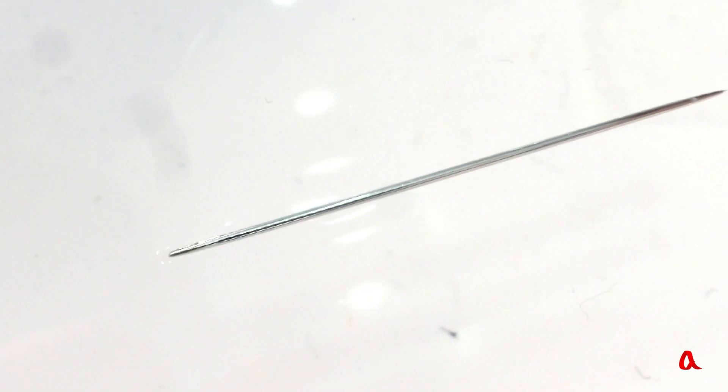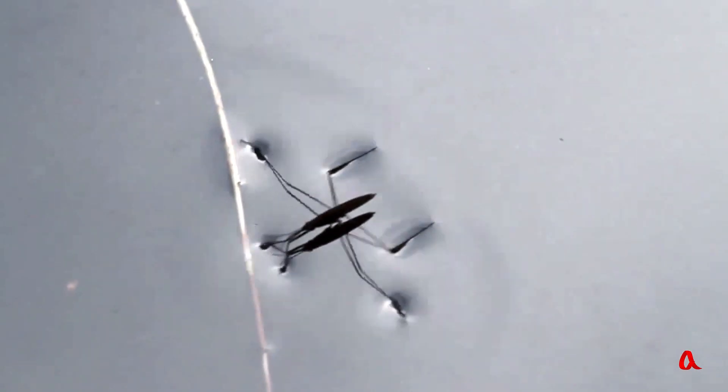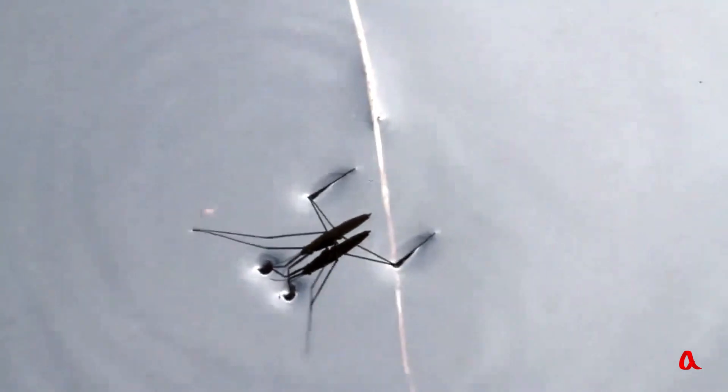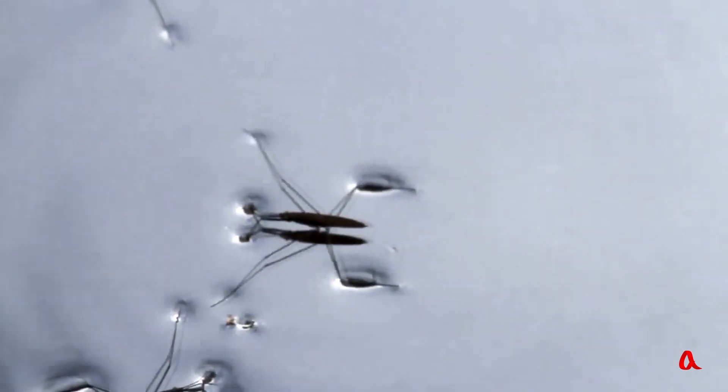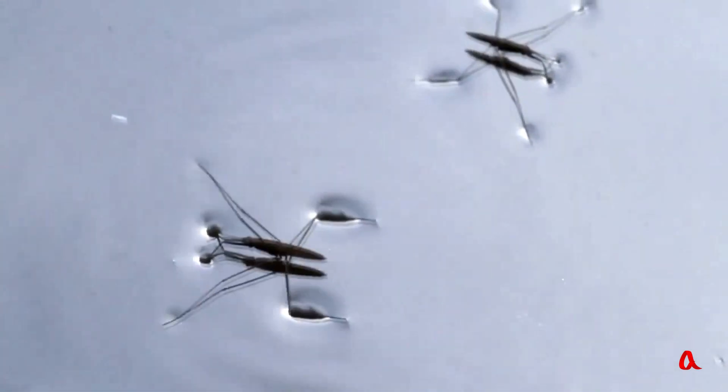But take a closer look. The water near the needle has caved in. It is in the same way that water caves in around the tarsi of water striders that can run along water surfaces on their four thin legs perfectly well and do not drown.